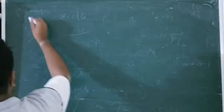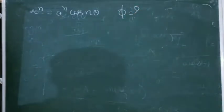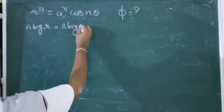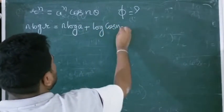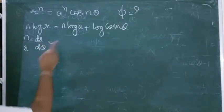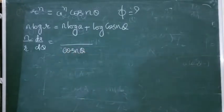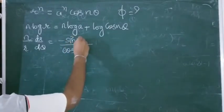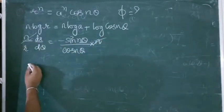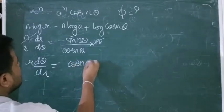Let's do one more question. Given rⁿ = aⁿ·cos(nθ), find φ. Taking log: n·log(r) = n·log(a) + log(cos(nθ)). Differentiating: n·(1/r)·dr/dθ = -sin(nθ)·n / cos(nθ). The n's cancel, giving (1/r)·dr/dθ = -sin(nθ)/cos(nθ). Reciprocating: r·dθ/dr = -cos(nθ)/sin(nθ) = -cot(nθ).